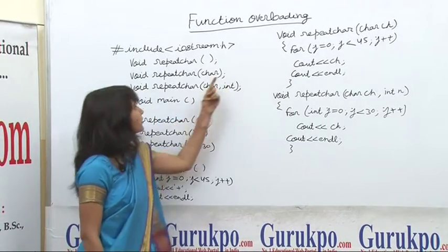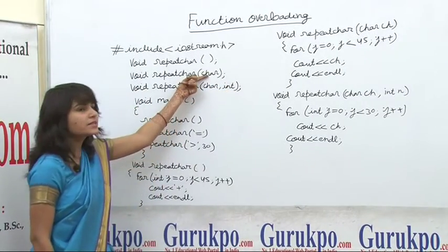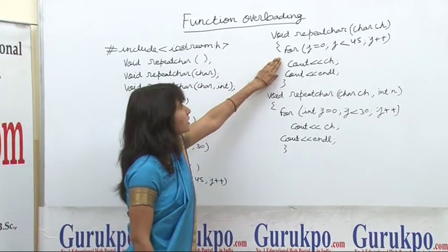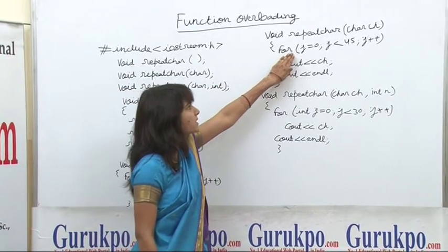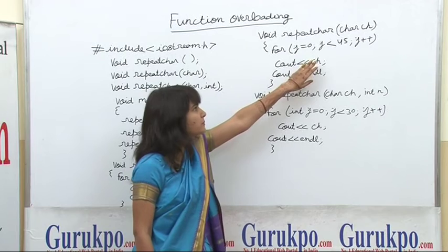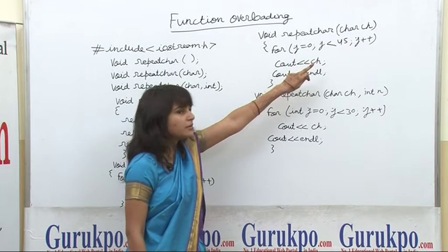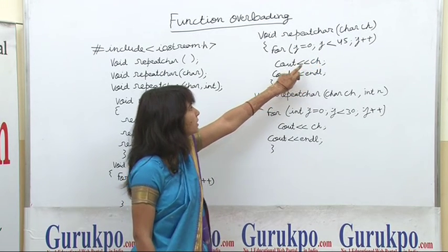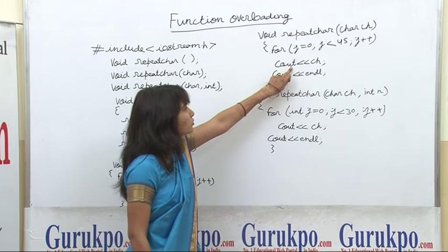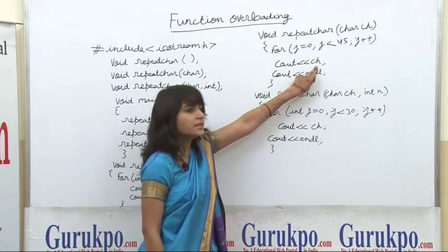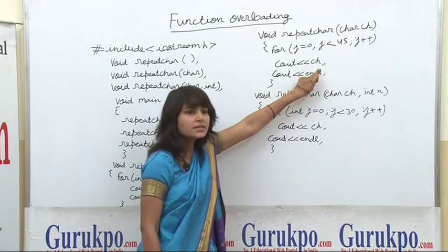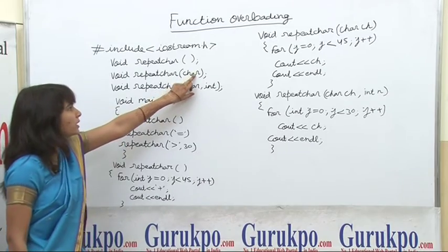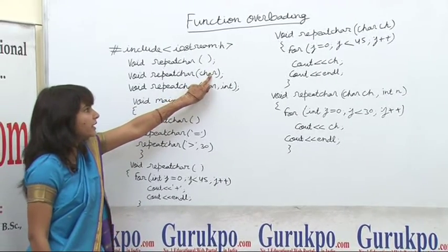The second repeat_character function has a single argument. Here the definition is: a for loop is executed 45 times, incrementing by one each time, and through cout it displays ch — the character argument which is passed to this function.